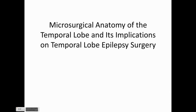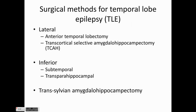I'll be talking about microsurgical anatomy of the temporal lobe and its implications on temporal lobe epilepsy surgery. Coming to the surgical methods of temporal lobe epilepsy, we have the lateral procedures which include anterior temporal lobectomy and transcortical selective amygdala hippocampectomy. We have the inferior procedures via the subtemporal route or through the transparahippocampal route. Also we have the trans-sylvian amygdala hippocampectomy.